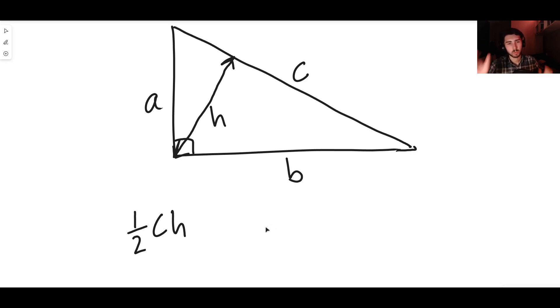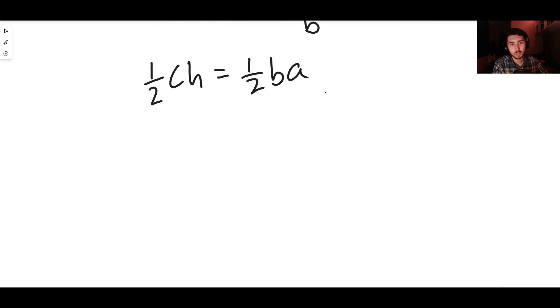Now many of you may be thinking, hold on, I thought one half base times height would be one half b times a, because b is the base and a is the height. And I would say you're completely correct, because they're both the area. Both of these represent the area of the triangle—they're the same. They're both one half base times height, bearing in mind this is a 90 degree angle, so it is really the perpendicular height.